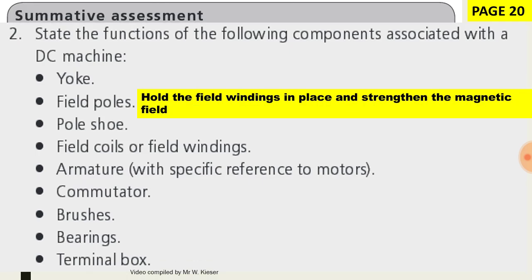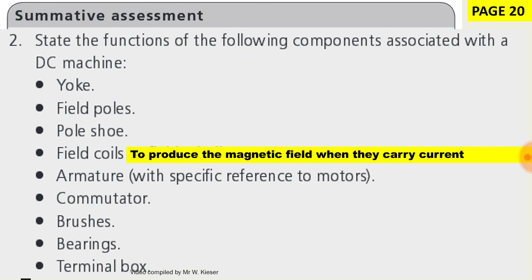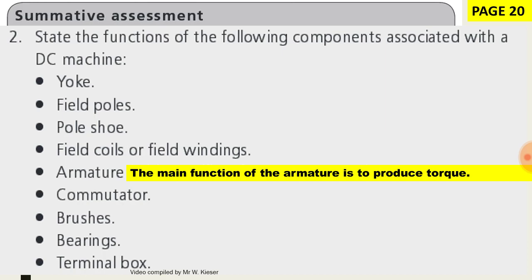The field poles hold the field windings in place and strengthen the magnetic field. The pole shoe bolts to the field pole and helps to distribute the magnetic field over the air gap. Field coils, also known as field windings, are used to produce the magnetic field when they carry current. The main function of the armature is to produce torque — torque being the twisting force about angular motion.